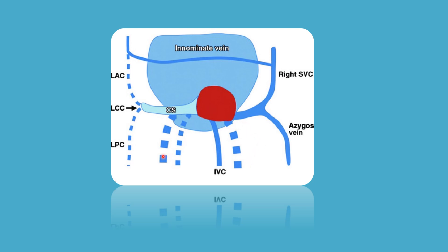The left horn and the body of the sinus venosus form a narrow tube-like structure, which persists as the coronary venous sinus. An oblique cross connection extends from the right anterior cardinal vein to the left anterior cardinal vein, forming the left brachiocephalic vein. The left duct of Cuvier, connected to the left horn, persists as the oblique vein of the left atrium — the smallest tributary of the coronary sinus — which is separated from the left atrium by a small sinoatrial fold.